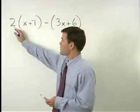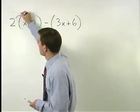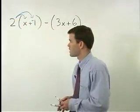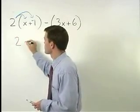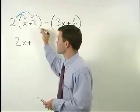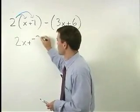Now we can distribute this two through the first set of parentheses. That gives us 2 times x or 2x plus 2 times negative 1 which is negative 2.